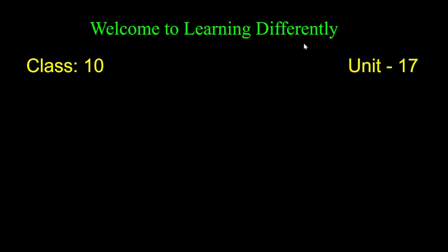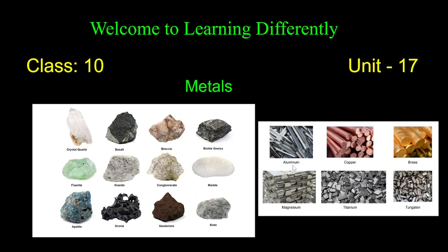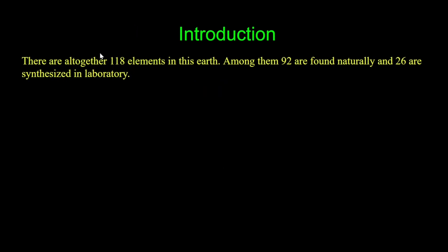Hello everyone, welcome to Learning Differently. Today we are discussing Class 10 Unit 17: Metals. Metals are found all around us — aluminum, copper, brass are examples of metals we use daily.